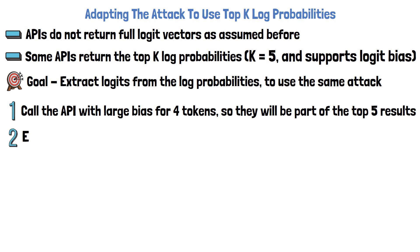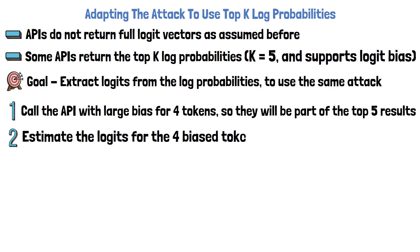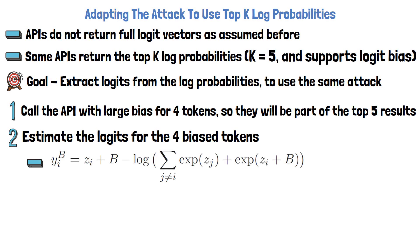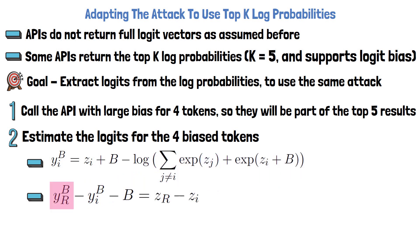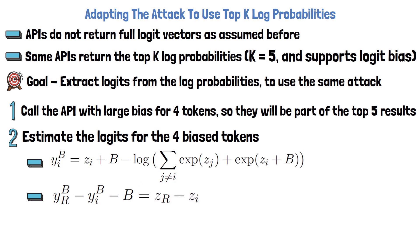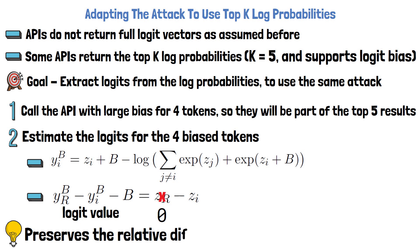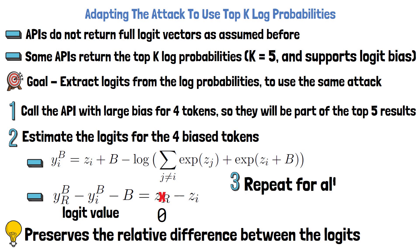Second, we want to estimate the logit values for the four bias tokens. The log probability y for some bias token i equals z — the logit — plus b, the bias we added, and another component dependent on the bias. Now if we take the log probability of the reference non-biased token yR and subtract the log probability of a bias token and the bias b, the log component is removed and we remain with the difference between the logits of the reference token and the bias token. If we replace the reference token logit with zero or another constant value, we get an approximation for the logits, and importantly the original difference between logits is preserved since we use the same reference token logit value. The third step is to repeat this each time for different four tokens until we get the logits of all tokens.